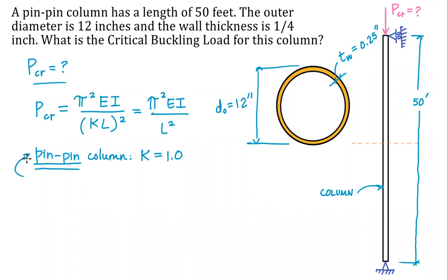All right. So it looks like we need a moment of inertia to put here in the numerator. We need a modulus of elasticity and we need a length. The modulus of elasticity we're going to look up in a table. I think I forgot to write this down, but we're going to assume that this is a steel column.